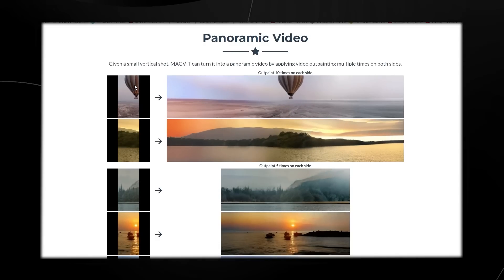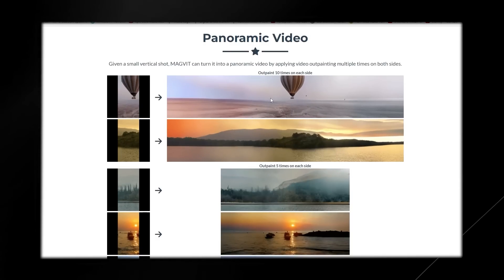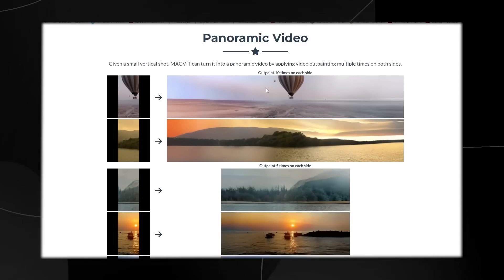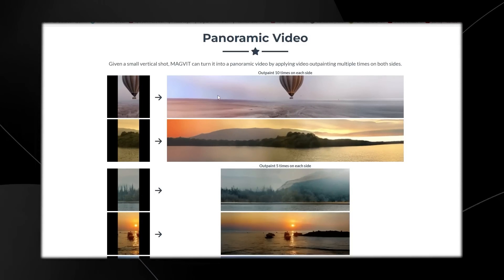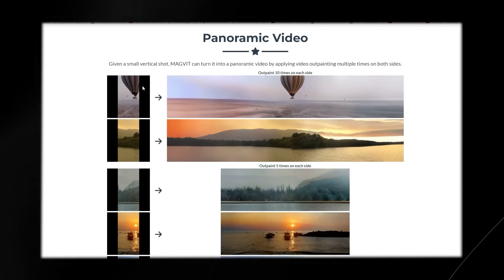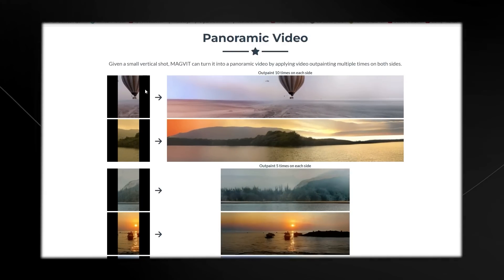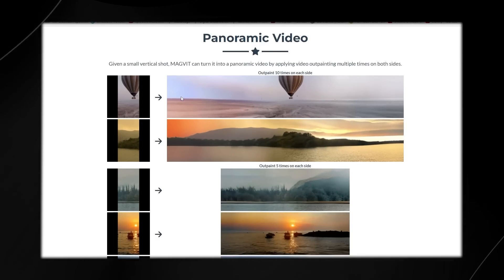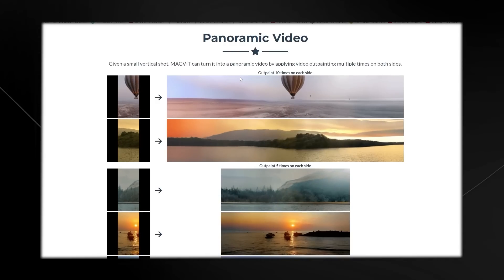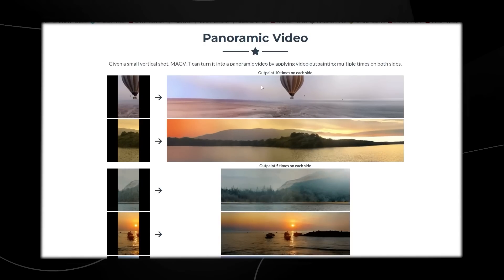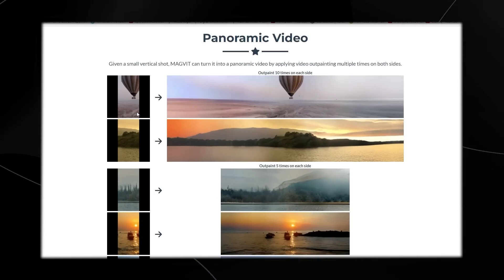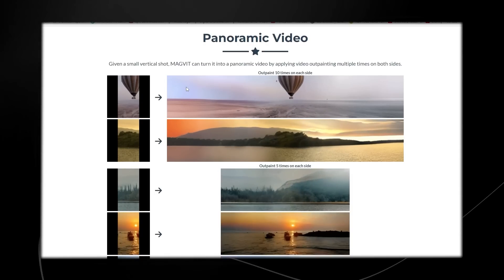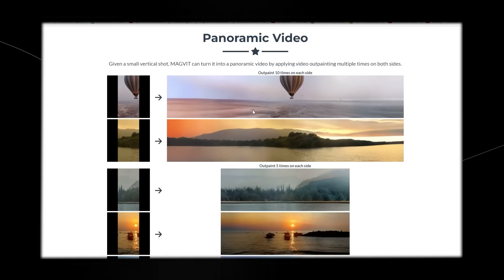We can see the first initial shot of a hot air balloon, and then MAGVIT has the ability to outpaint ten times on each side, providing us with a panoramic video. Essentially, if someone took a video on their phone vertically, you could transform that video using this AI to get a full-scale panoramic video. Right now the quality isn't that impressive, but this is the first type of outpainting we are seeing on videos. Outpainting is essentially where you use the inner edges to predict what the outer edges are going to be — something that recently happened with Adobe's Photoshop for images, and this is essentially a video version.